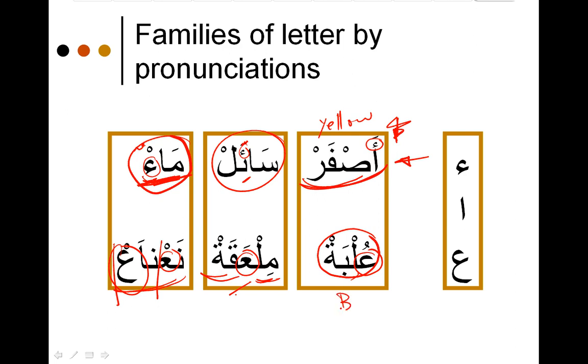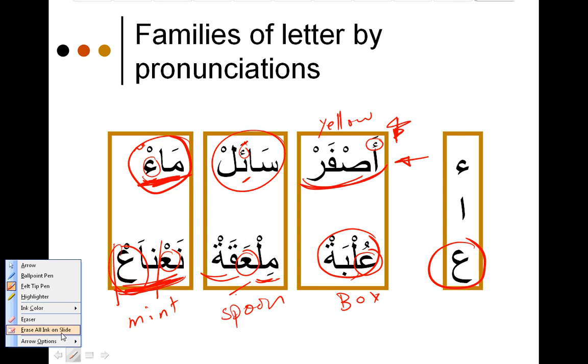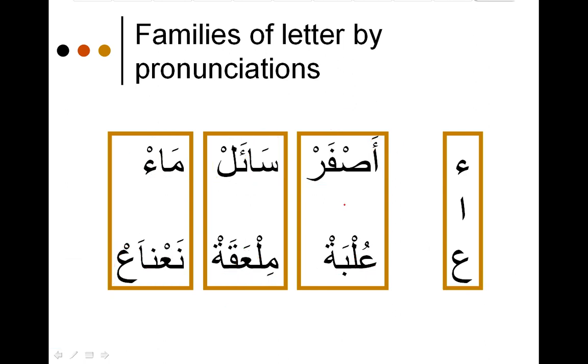The meaning: ulba means a box, mil-a-qa is a spoon, and na-na is mint. If you can really pronounce this, then you're good, because this is a very hard letter to pronounce. There's no equivalent in the English language, so it's very hard to describe.